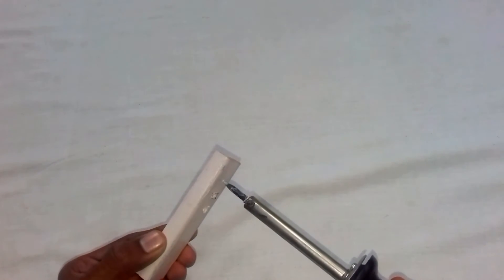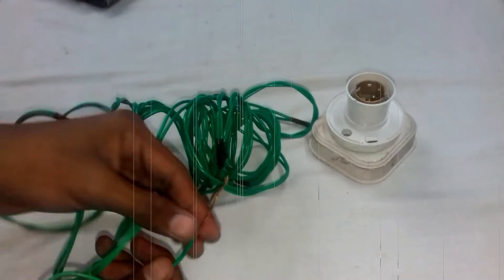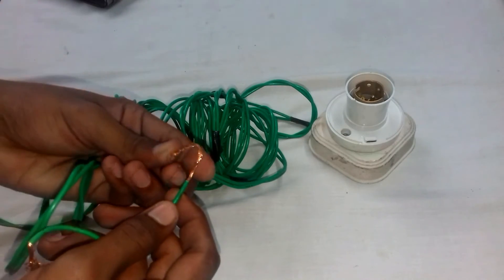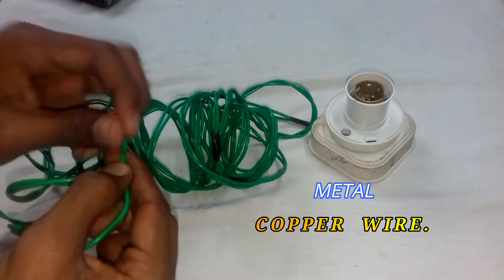On the other hand, metals are good conductors of electricity. The network of wires that is present at your house is made up of metal copper wire, because metal can conduct electricity very easily.